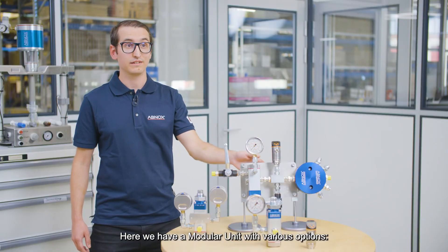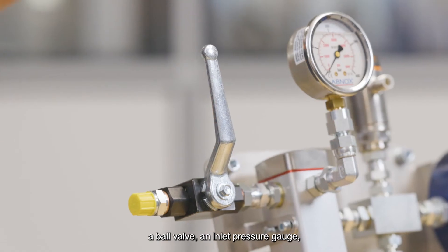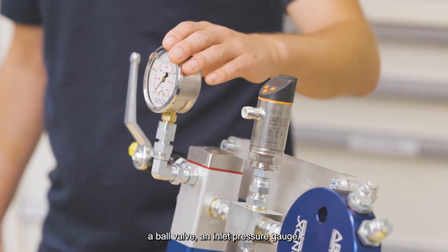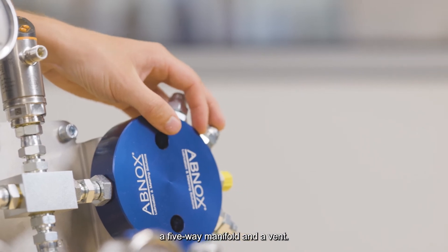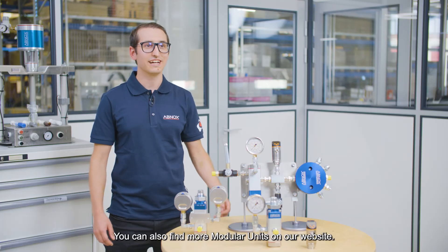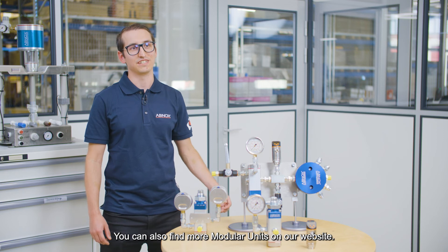Here we have a modular unit with various options: a ball valve, an inlet pressure gauge, a digital pressure sensor, a five-way manifold, and a vent. You can also find more modular units on our website.